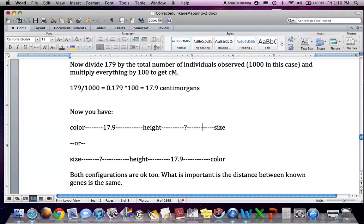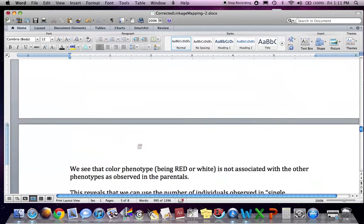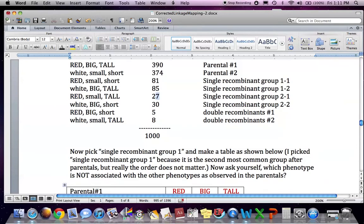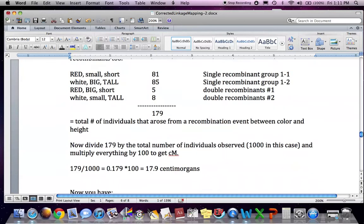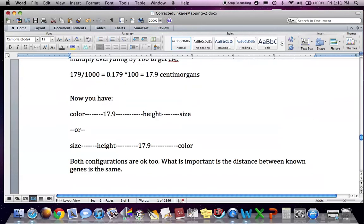But we can already assume that size is going to be much closer to height based on the lower recombination frequency. Based on the lower individuals that have that recombination event. So it's only 27 and 30 versus 85 there. So we go, oh, you know, okay, it's going to be closer. So that's a little trick too.